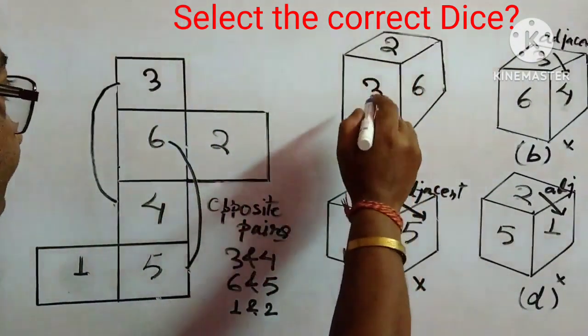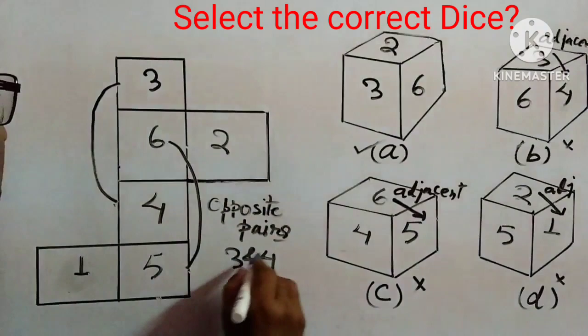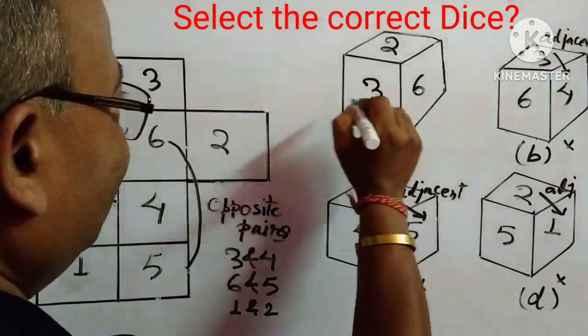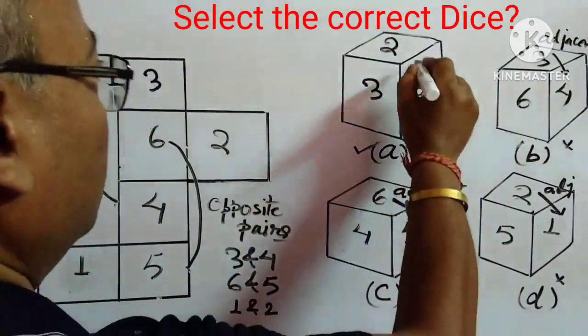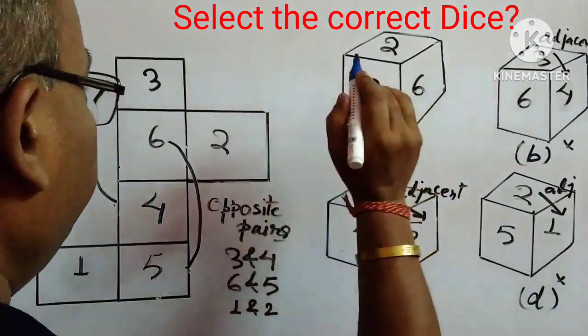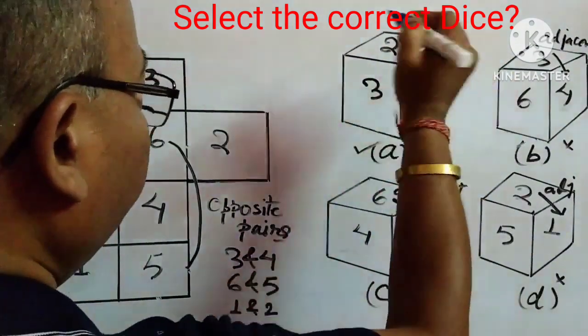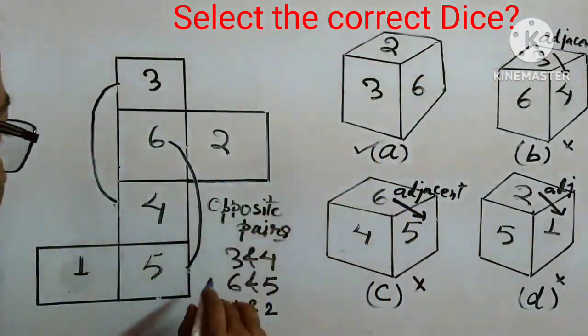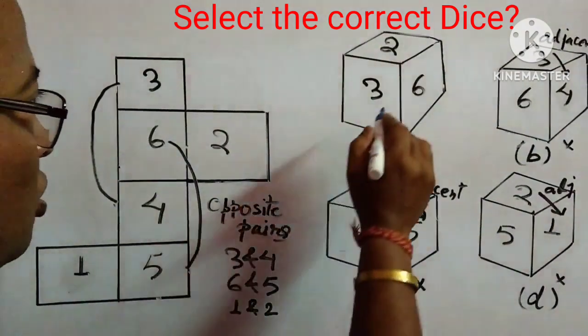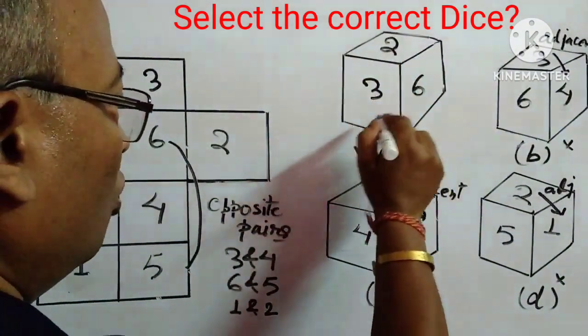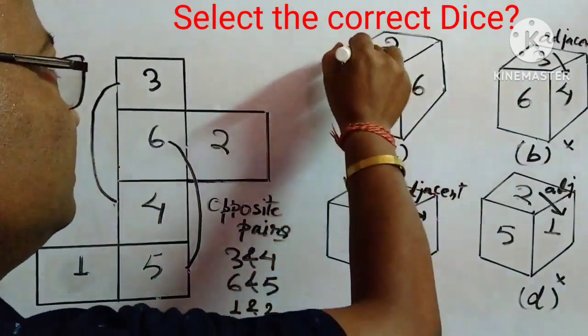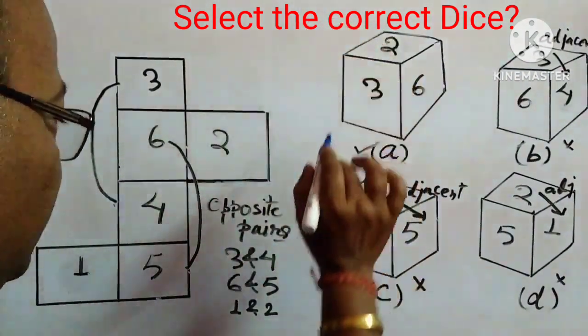Now, we will check whether this one is correct or not, see, 3 and 4 are opposite, so 3 is given, we are not observing 4 anywhere, so definitely 4 is opposite of 3, the back side it will be 4. Now, 6 and 5 are opposite, so are you observing 5, no, so 6 is given, so that means 5 is just opposite of 6.